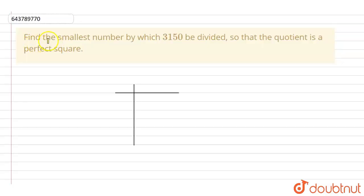In this question, we have to find the smallest number by which 3150 should be divided so that the quotient is a perfect square.